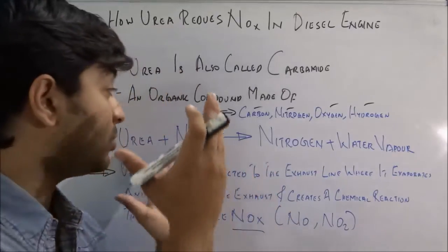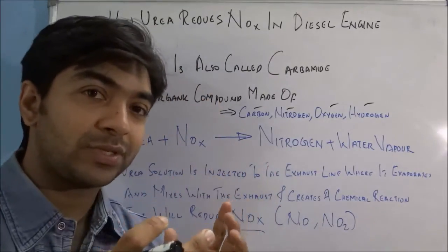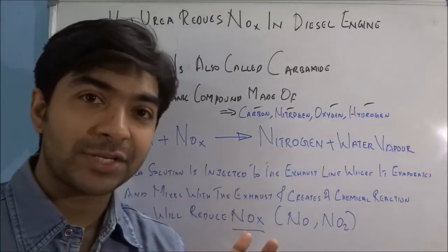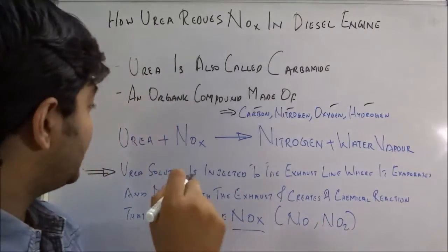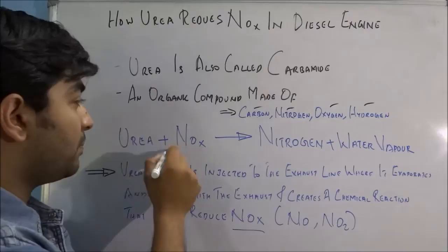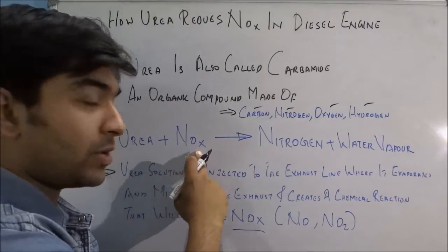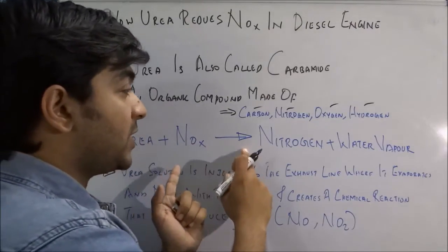So it's very important to reduce the amount of NOx coming from the exhaust. Urea supports a chemical reaction which reduces the NOx. Let's see how it happens. Urea plus NOx—nitrogen oxide or nitrogen dioxide—is reduced into nitrogen and water vapor.